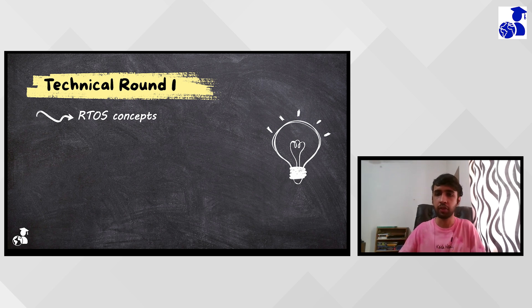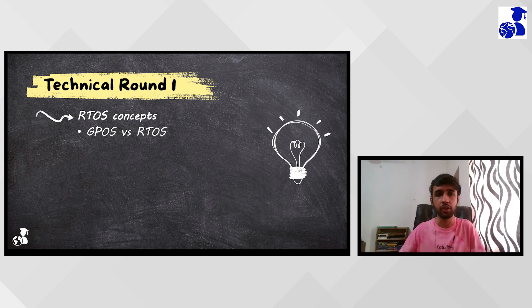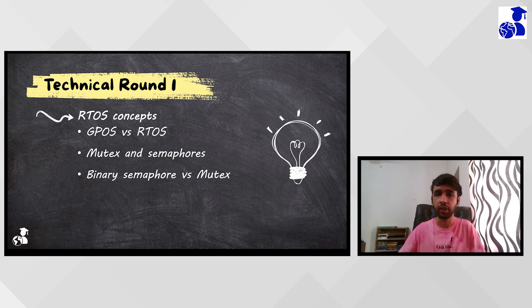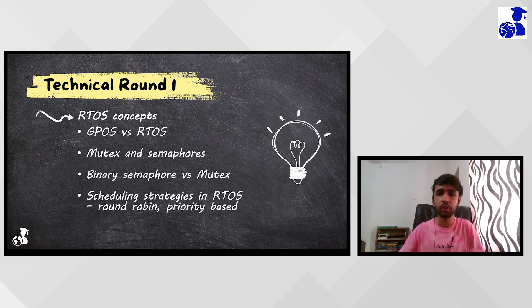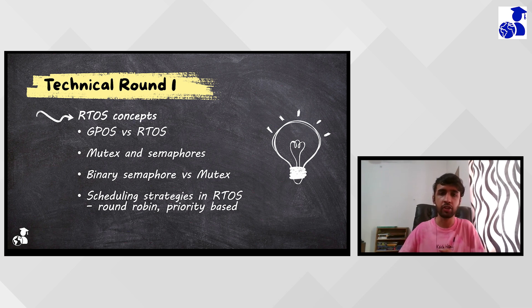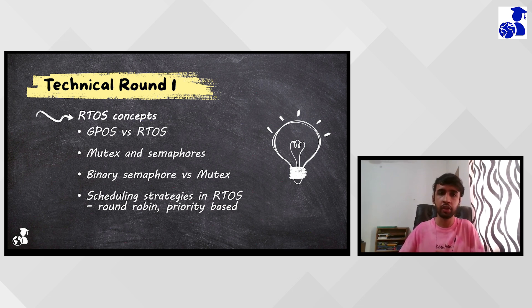Then he came on to mutex and semaphores. What is the difference between mutex and semaphores? Why are they used? So why is there a need of a binary semaphore when we already have a mutex? Then he came on to scheduling strategies, which are the scheduling strategies that we used in RTOS. He asked pretty much in detail about round-robin scheduling, priority-based scheduling, what is the need for those scheduling. So in these questions, basically he was trying to ask me why those scheduling procedures were needed instead of asking what is the scheduling procedure. So he was trying to understand the need of why the scheduling procedures were needed.